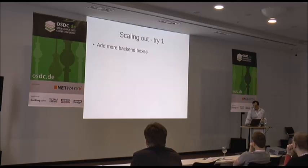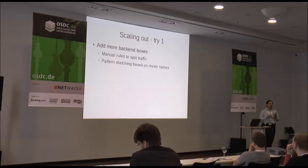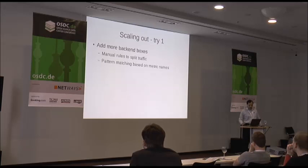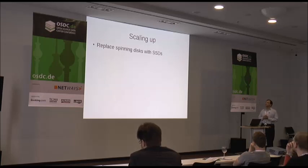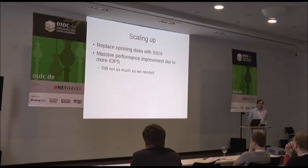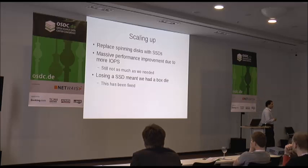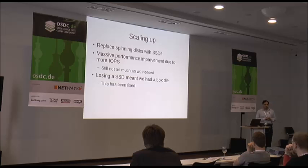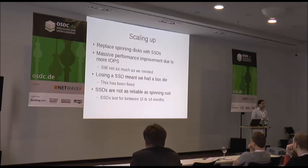So we added more boxes and had to split traffic — let's do some pattern matching, half my boxes go here, half go there based on names. Balancing traffic is hard. Then we went: let's just use SSDs. We replaced spinning disks with SSDs — massive, massive performance improvement. And we still need more. For some reason the HP firmware meant that if you lost a disk, the box would die — this is not supposed to happen in a RAID 1 setup, but we had it happen. Fixed with a firmware upgrade, but very irritating.